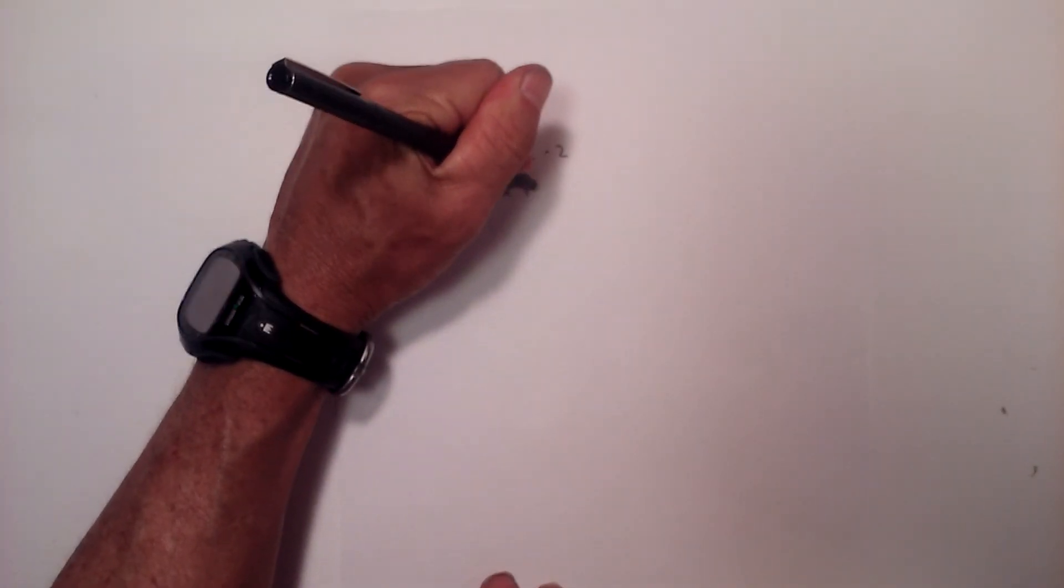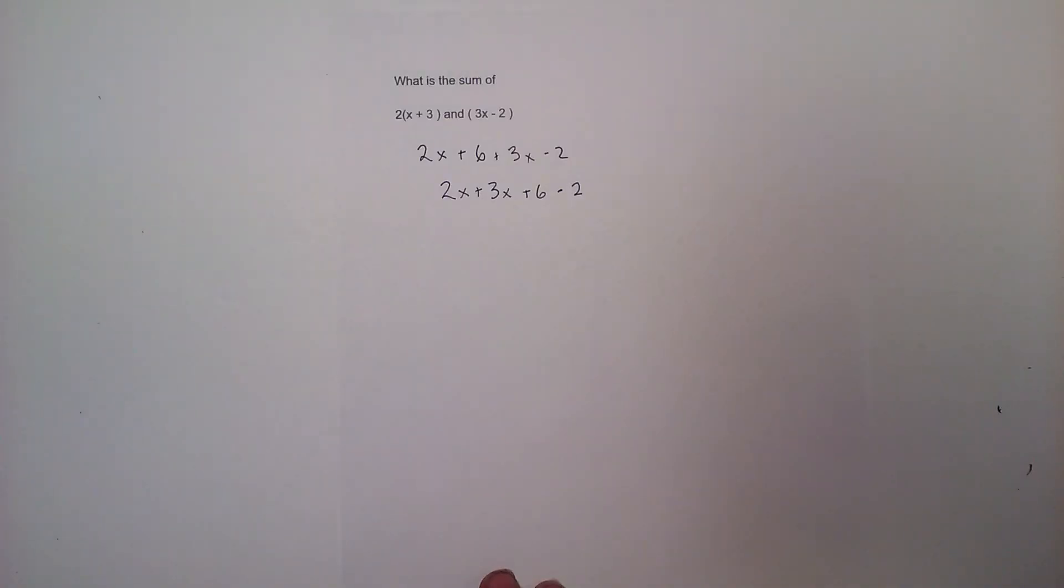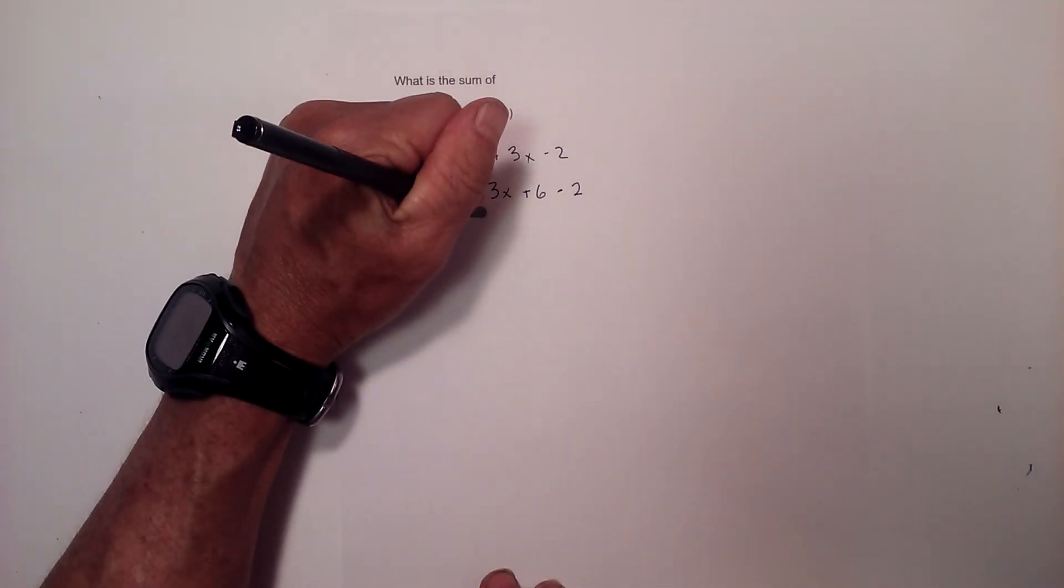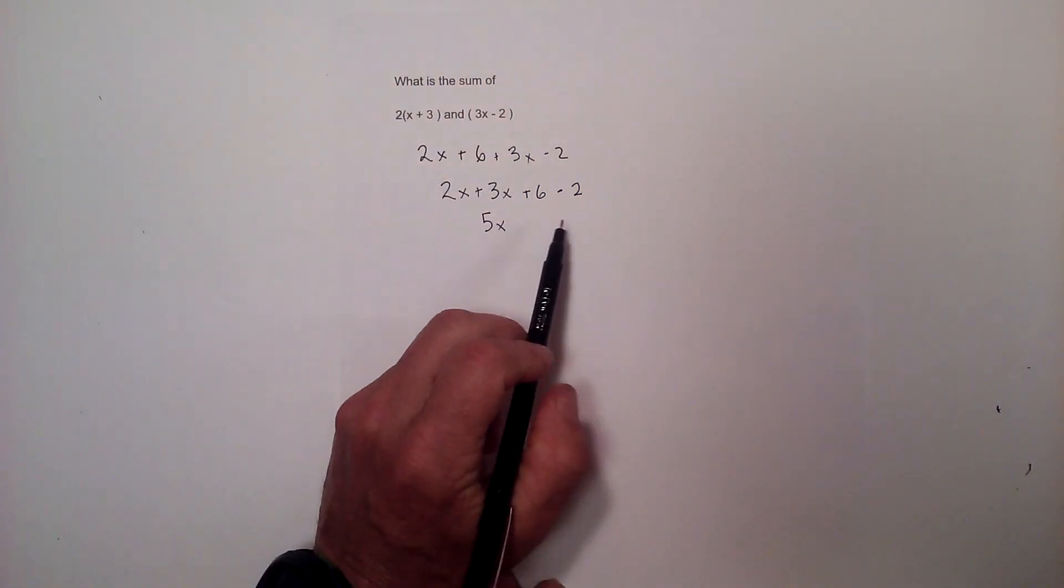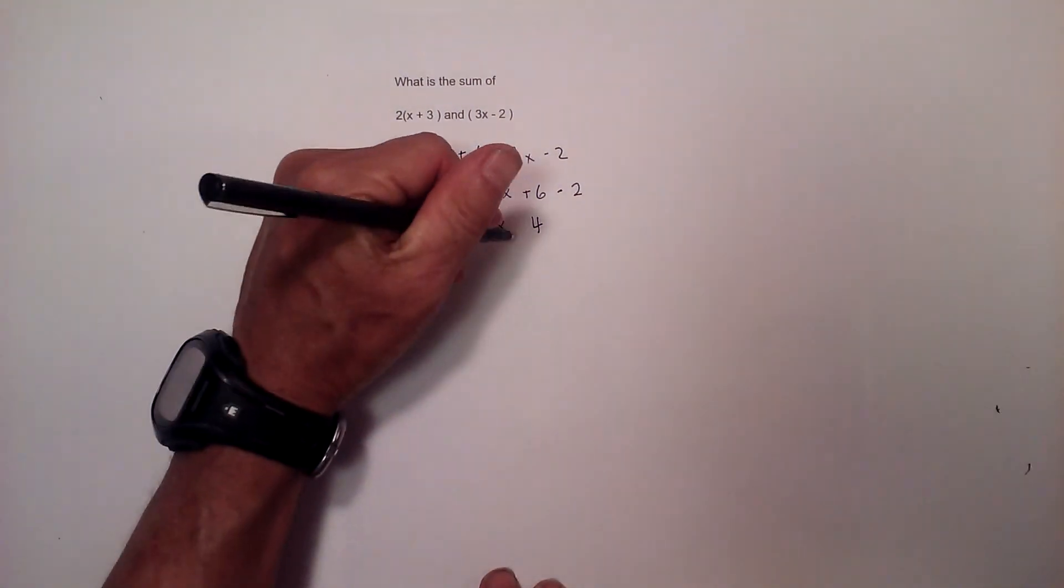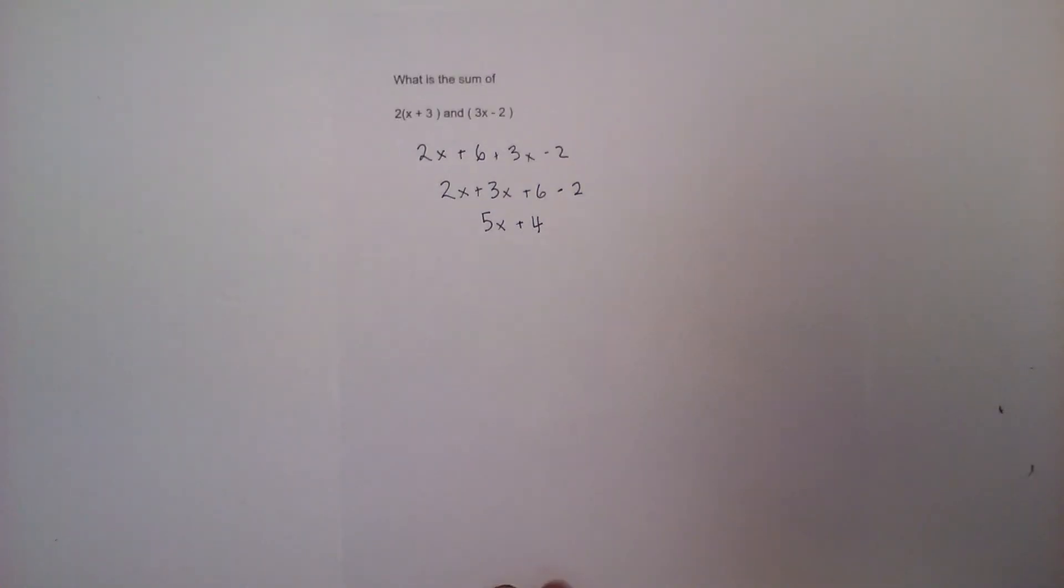And then we have a positive 6 and a negative 2. And now we add 2x and 3x is 5x. And the difference between 6 and 2 is 4. And will that be positive or negative? It will be positive because 6 is larger than 2. So there we go, adding linear expressions.